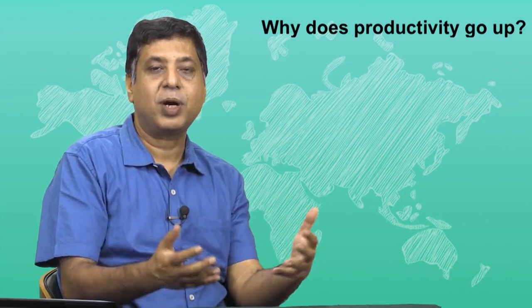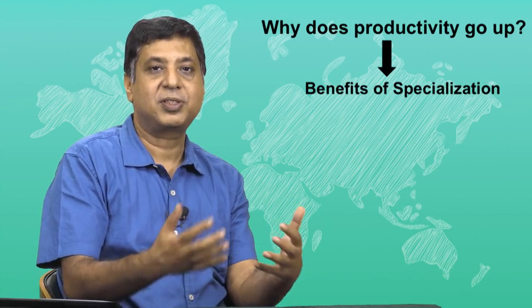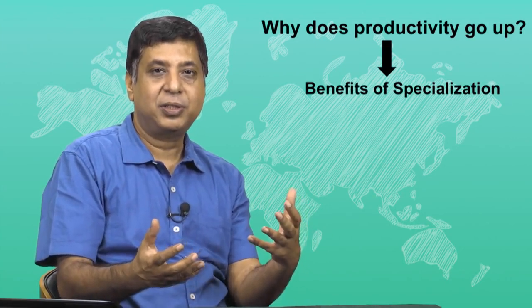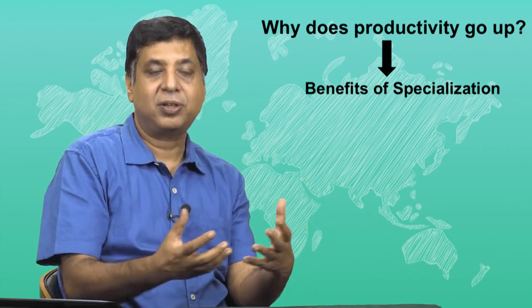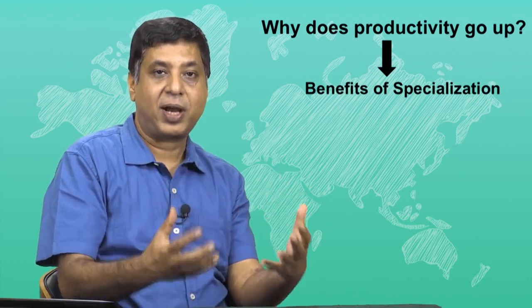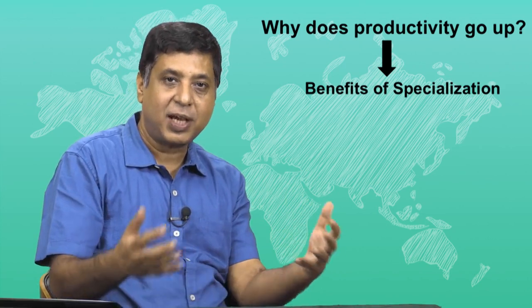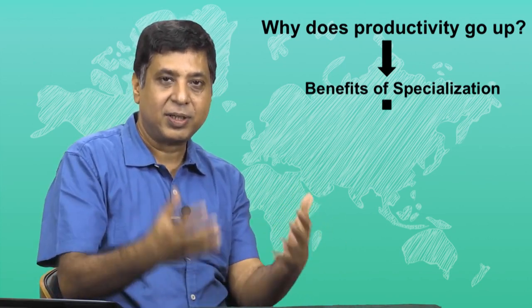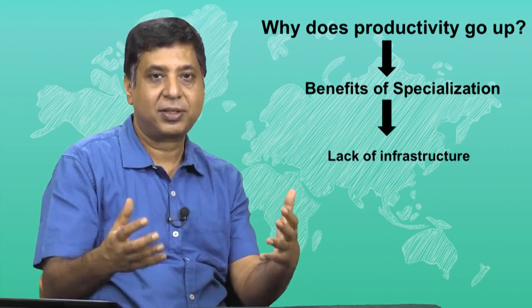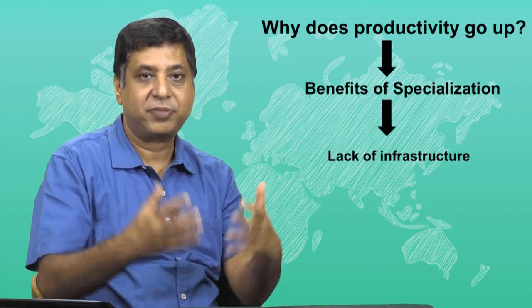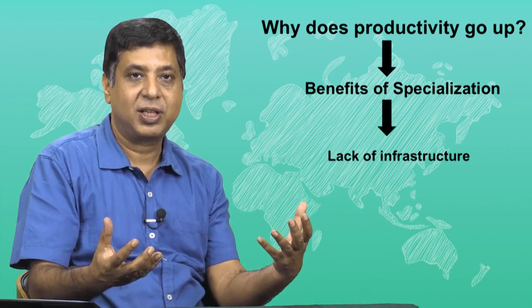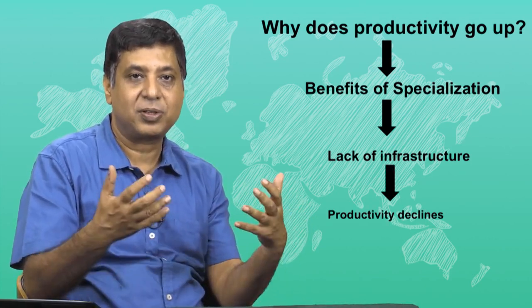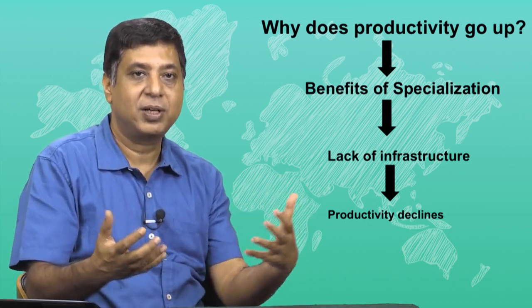Why is this so? You can think of why productivity goes up in the beginning — this is probably due to the benefits of specialization. As you hire more people, people can specialize and do whatever they are good at, and the whole factory or organization has higher levels of productivity. But finally, as you try to hire more and more people, they come across a lack of infrastructure, or a lack of space to sit or work. The benefits of specialization get overwhelmed by the lack of infrastructure.